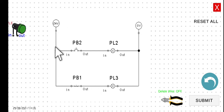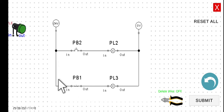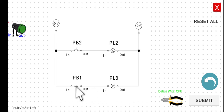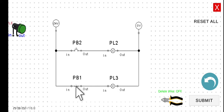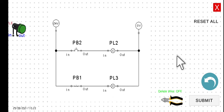For PB1 and PL3: the moment we start our power supply, there is already a closed circuit connection since PB1 is a normally closed push button, so current flows from the positive to negative side of the power supply and PL3 will be turned on. However, if we press PB1 it creates an open circuit and PL3 turns off. When we release PB1, it returns to its initial state and PL3 turns back on.